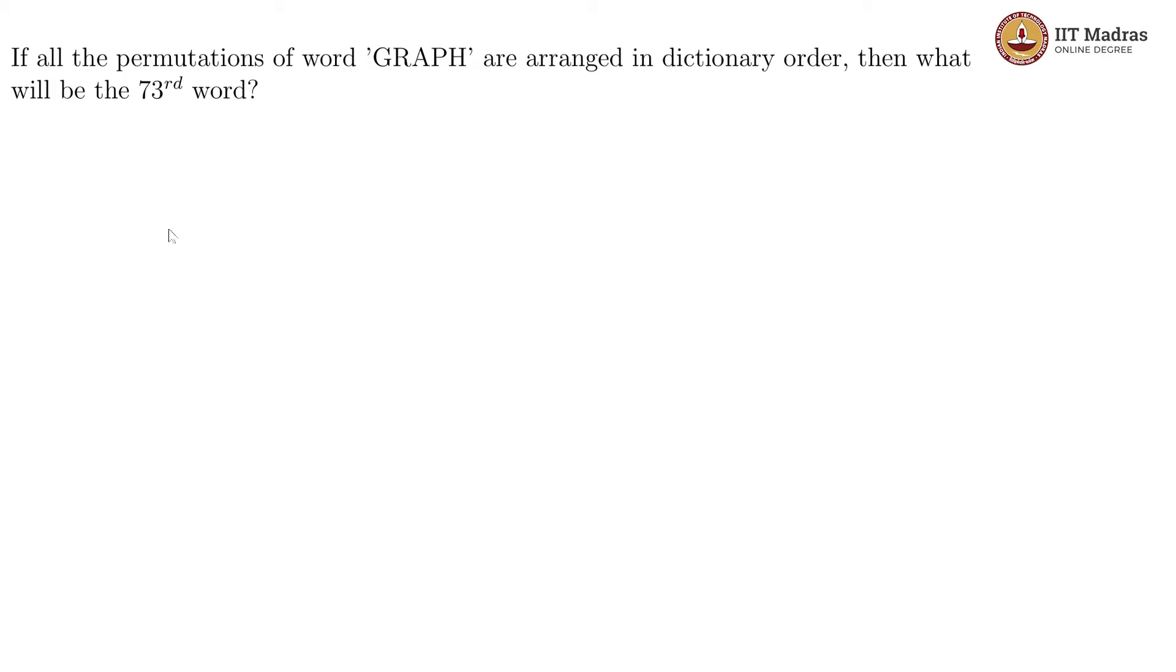In this problem, we are looking at the permutations of the word GRAPH and they are arranged in dictionary order, which means they go alphabetically. If we were to put them down, the very first word would begin with A, which is the first letter.